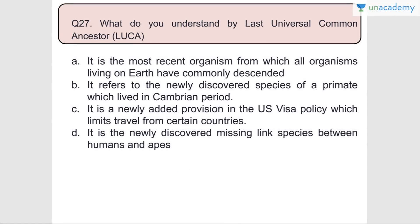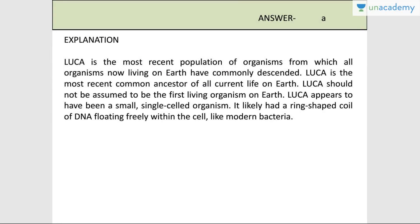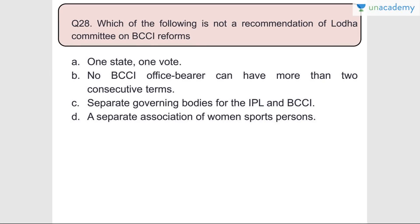Question number twenty-seven: What do you understand by LUCA - the Last Universal Common Ancestor? Basically it is the most recent organism from which all living organisms on earth have commonly descended. Answer is A. LUCA is the most recent common ancestor of all current life on earth. LUCA should not be assumed to be the first living organism. LUCA appears to have been a small single-celled organism, likely with a ring-shaped coil of DNA floating freely within the cell, like a modern bacterium.